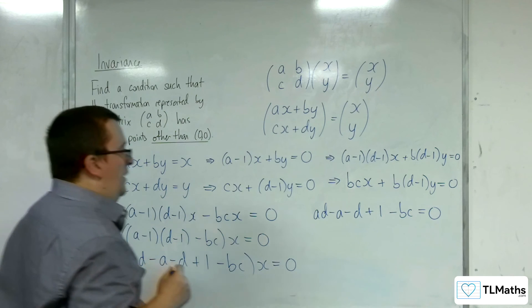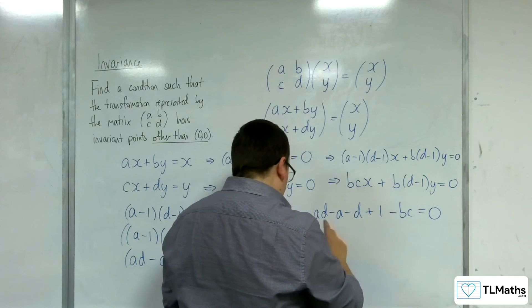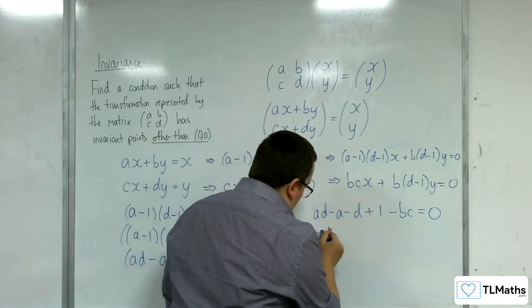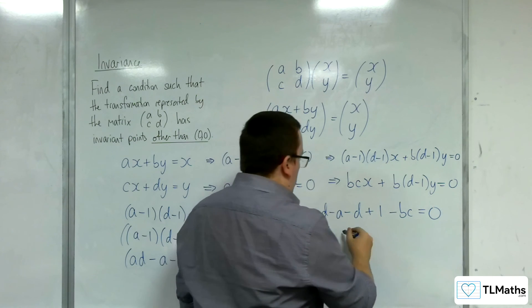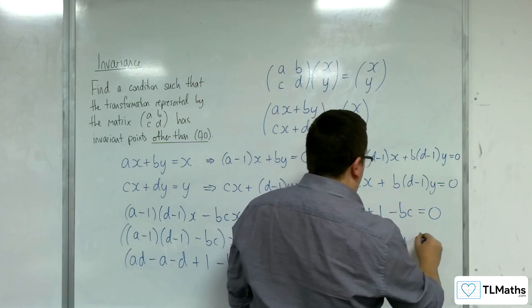If you rearrange this, you would have ad - bc. And if I move everything else to the other side, I've got a + d - 1.